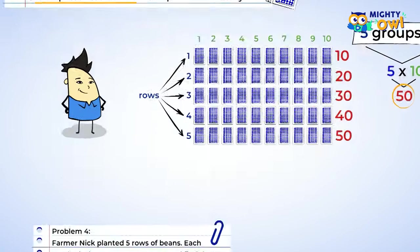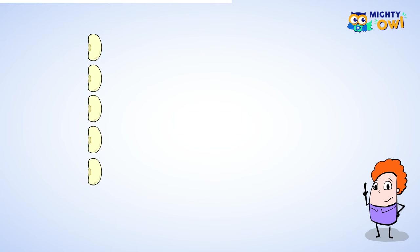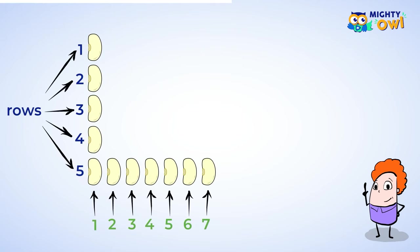Keep practicing with this problem. Farmer Nick planted five rows of beans. Each row had seven beans. Create an array and find the total number of beans that Farmer Nick planted. Okay, start by creating the array. You have five rows. Each row has seven beans.